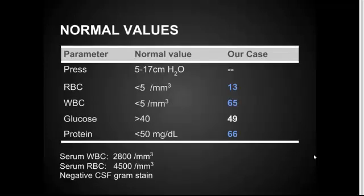Looking at the values from our case: she had a traumatic tap, with 13 red blood cells and 65 white blood cells. Her glucose was normal at 49, and her protein was elevated at 66. Her serum white blood count was 2,800, red blood cells were 4.5, and she had a negative gram stain on the CSF.